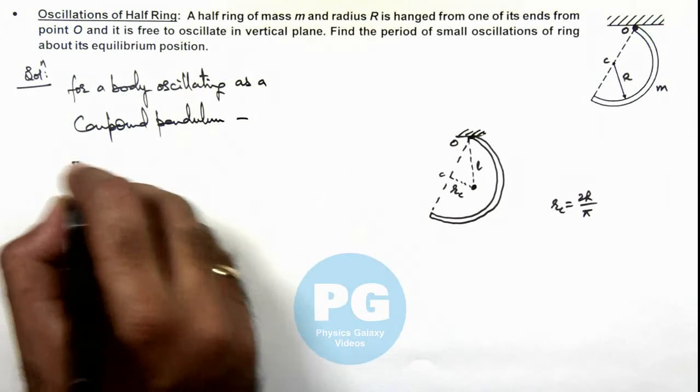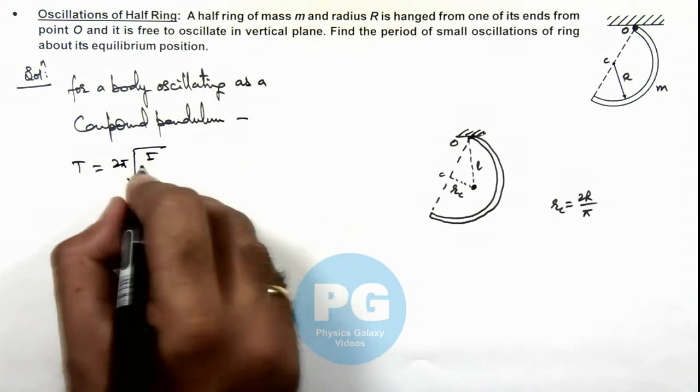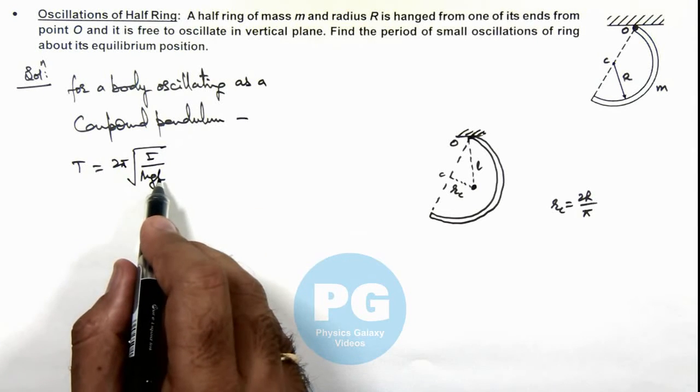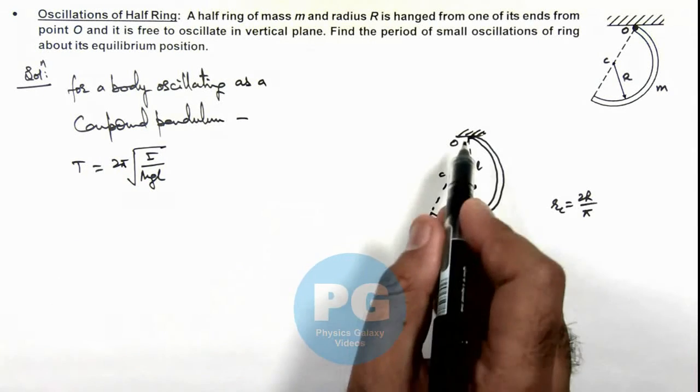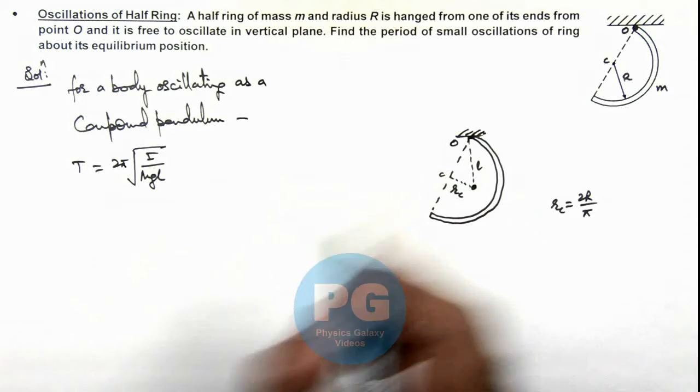Its time period of oscillation we can write as T = 2π√(I/mgl), where l is the distance of center of mass from point of suspension and I is the moment of inertia in this case.